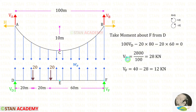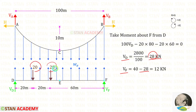In this process we should not consider WE. For VED we will get 28 kilo newton. To find VF we have to subtract VED from the total load. Here the total load is 20 plus 20, so it is 40. For VF we will get 12 kilo newton.